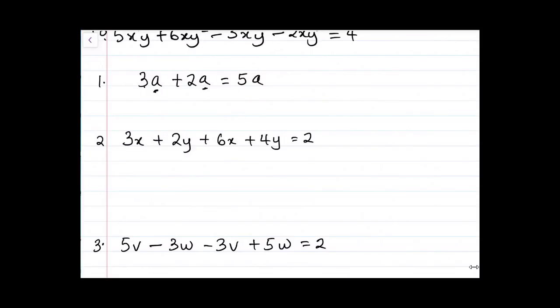What we want to do firstly in this case is we want to collect the like terms. So how do we do that? We're just going to simply gather together all the terms that are closely related. So we have 3x plus 6x plus 2y plus 4y equals 2.